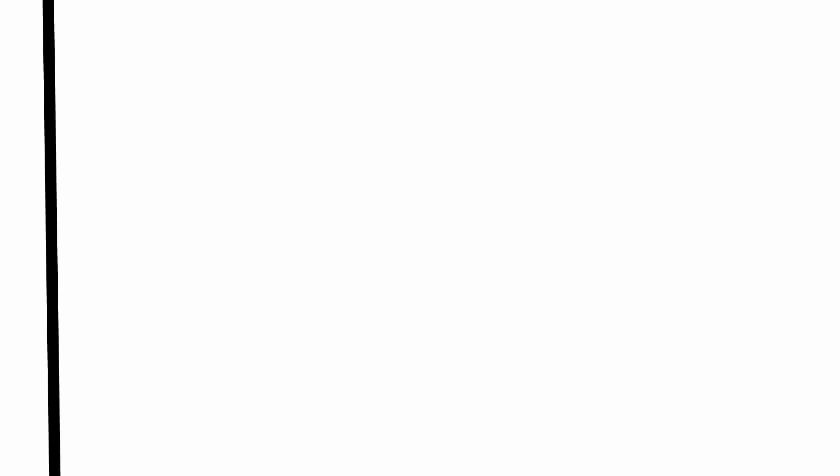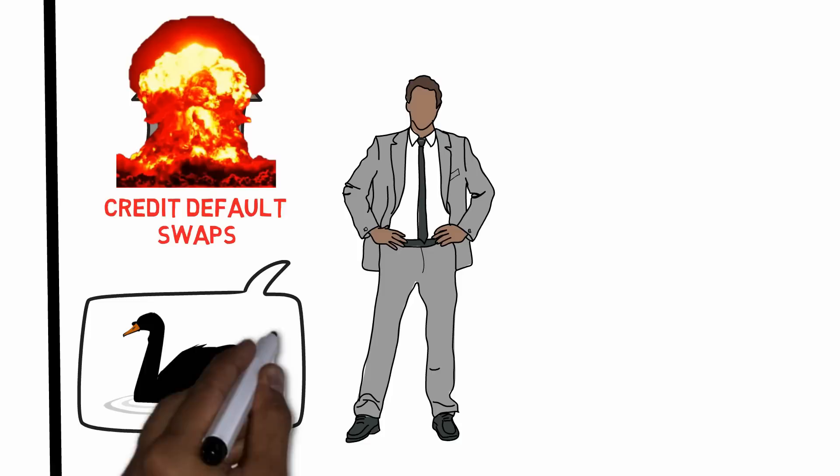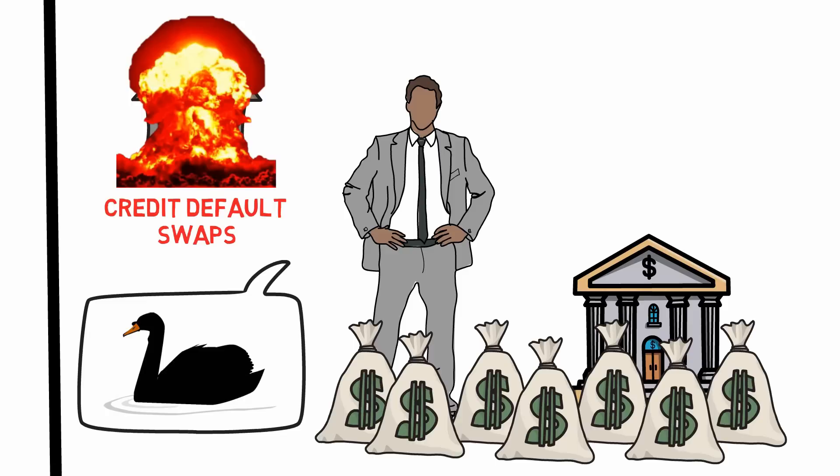Takeaway number one: What is skin in the game? Consider these two persons. A banker is selling questionable mortgage-backed securities, so-called credit default swaps. He knows that these securities possess a systemic risk which may cause them to blow up in the case of a black swan event. However, he and his employer are making good money from speculating in these securities, and if they were to blow up, the bank can probably expect a bailout anyway.